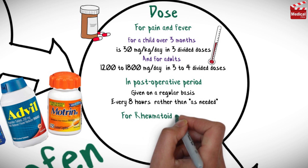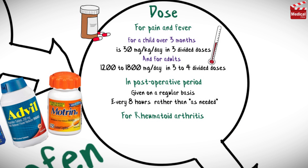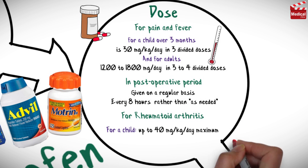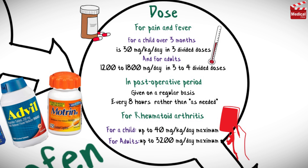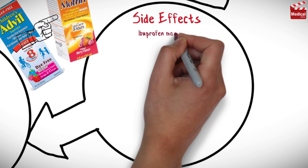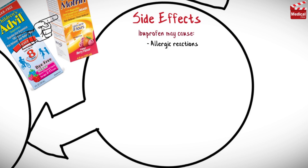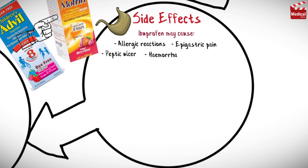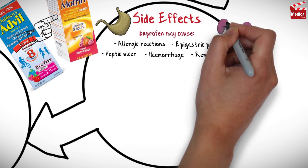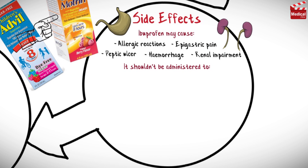And for rheumatoid arthritis. Ibuprofen may cause allergic reactions, epigastric pain, peptic ulcer, hemorrhage, and renal impairment. It shouldn't be administered to children under 3 months.